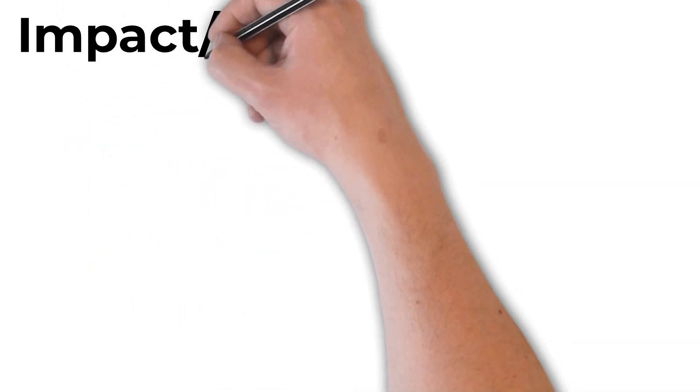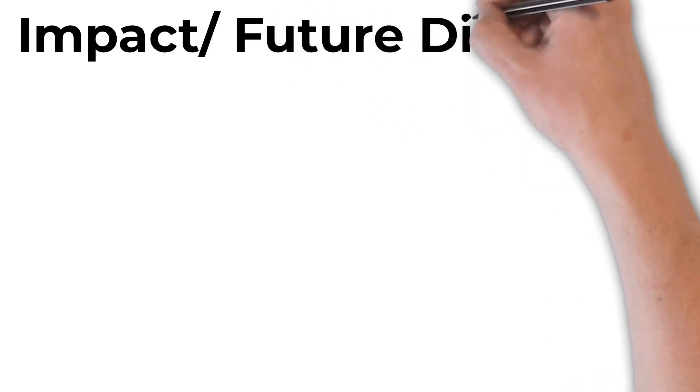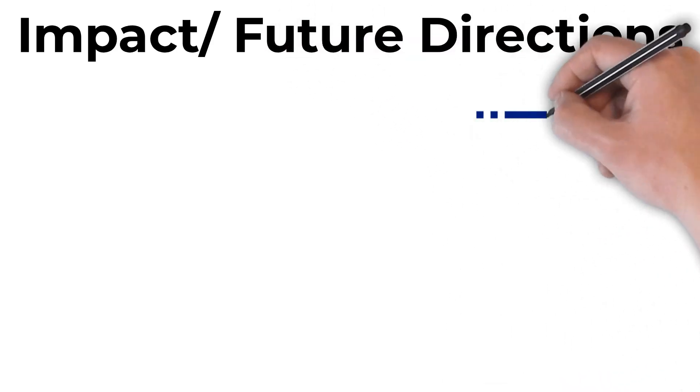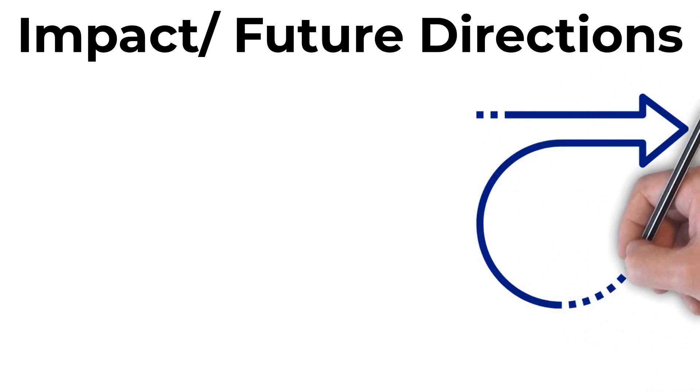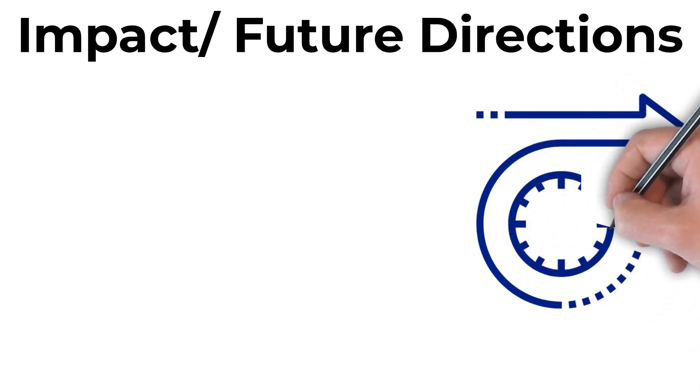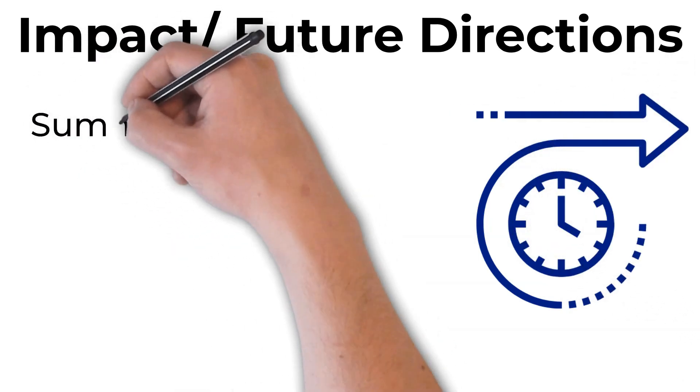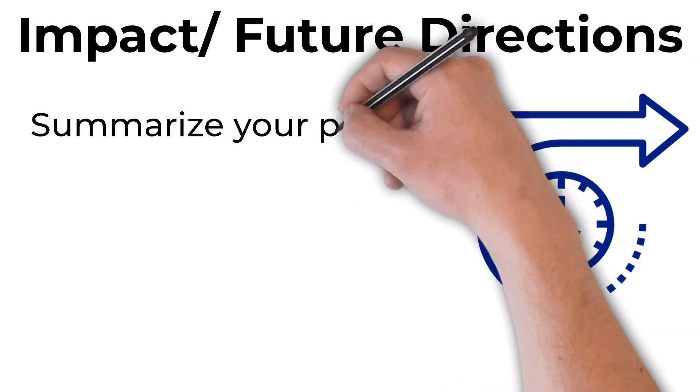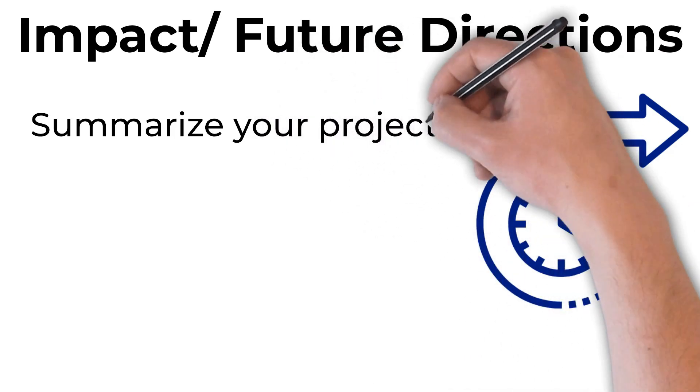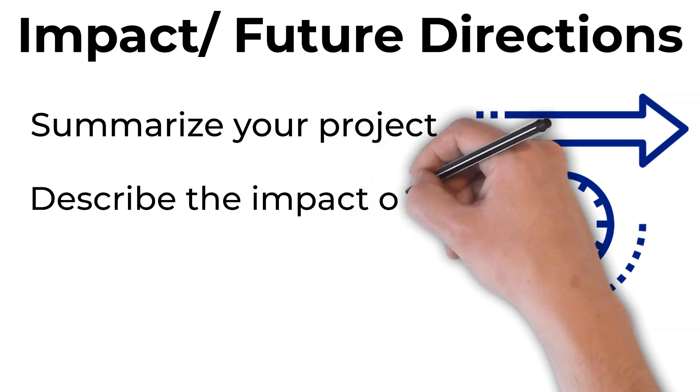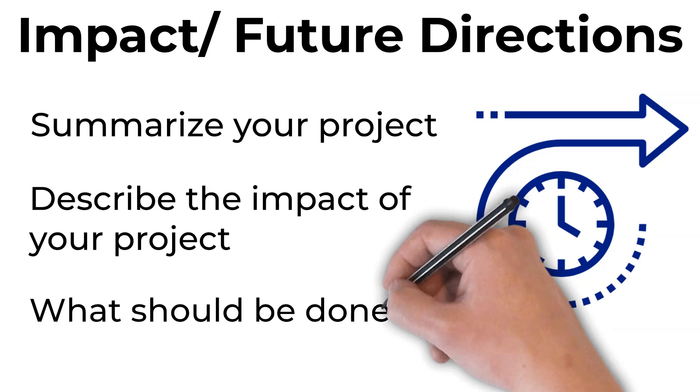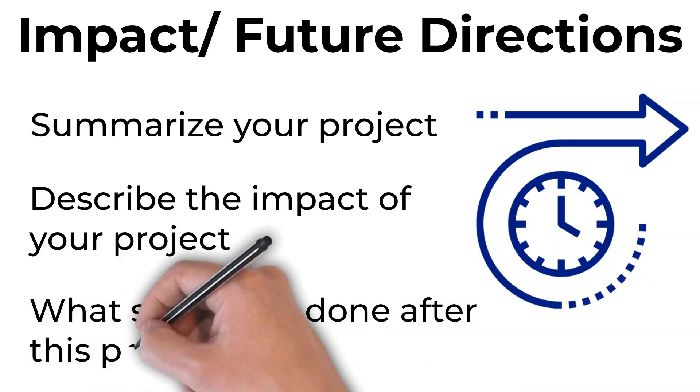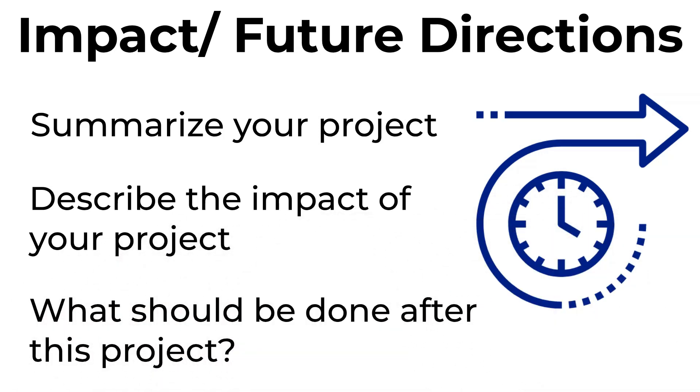Finally, we're going to talk about the impact and future directions of this proposal. This lets your readers know why they should fund this and what completing this project will enable them to do in the future. In this section, you want to summarize your current project and what you're going to complete. Next, describe the impact that your project will have, and finally, talk about what should be done after this project is completed and what type of research will be better informed because they funded your project.